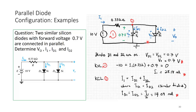Applying KCL: I1 splits into ID1 and ID2. Since D1 and D2 are identical diodes, ID1 equals ID2. Therefore each is I1 divided by 2, which equals 14.09 milliamps.